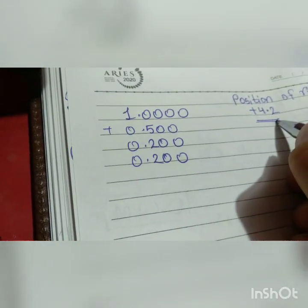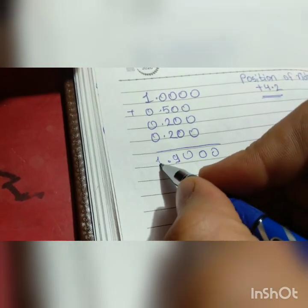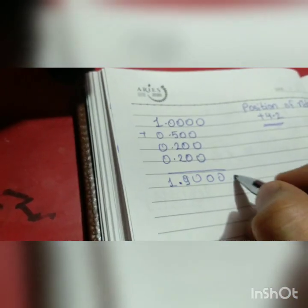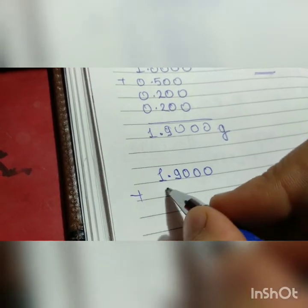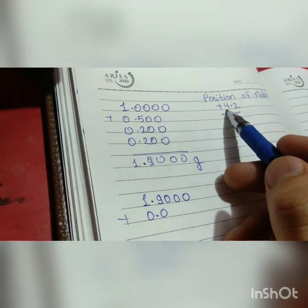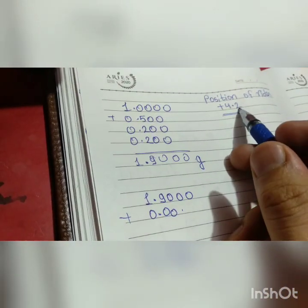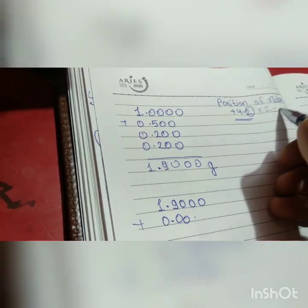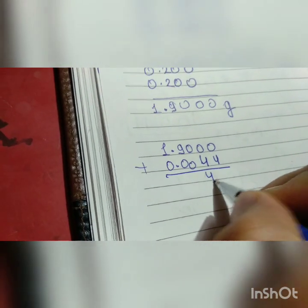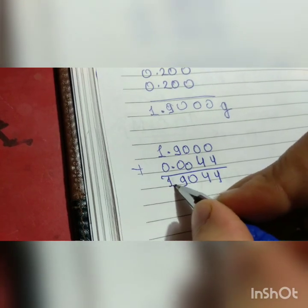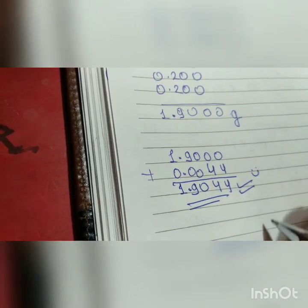You can see that's why I have written plus. Now add all these weights: 0, 0, 0, 9, and 1, so this is 1.9 grams of our weights. Now adding this, the weight of rider, plus 0 point... always this is written on the 3rd decimal place: 1, 2, and 3 here, and this is doubled. This number is always doubled, so this will be 0.0044.